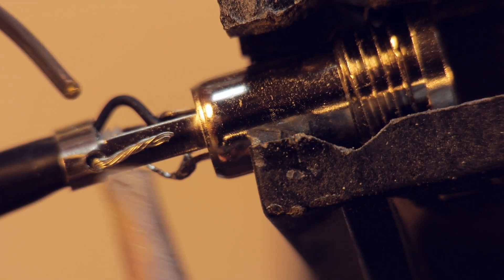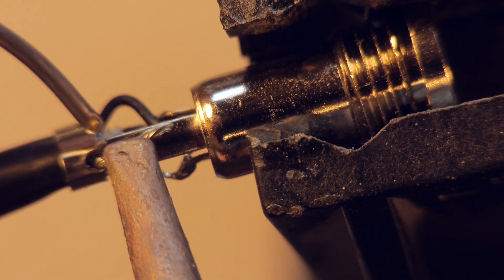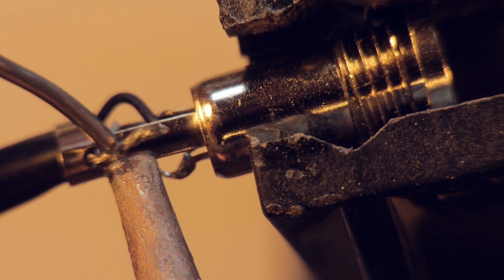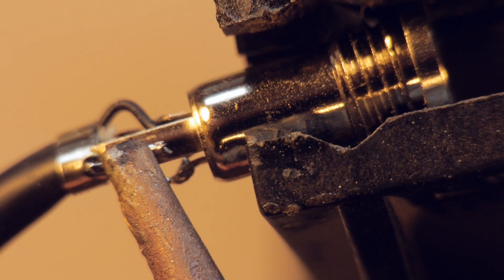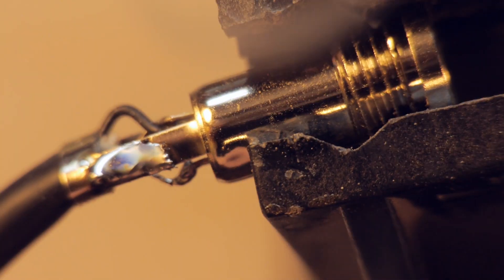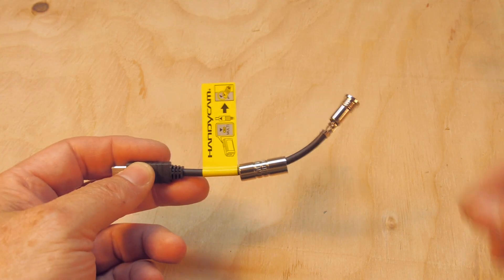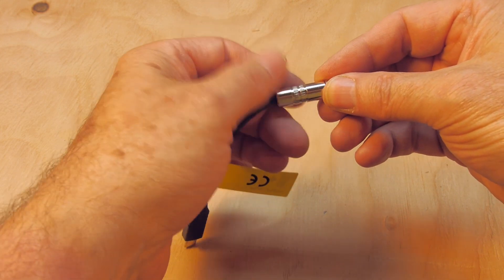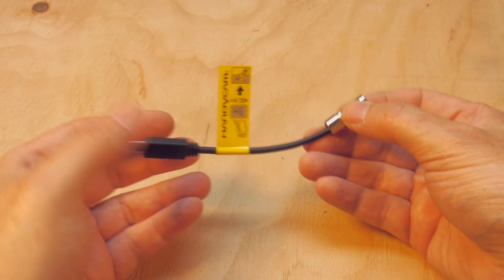And finally, we clamp the jack's clamp around the wire to hold it tightly and solder the braid onto the jack's ground terminal. Once we do that, our electrical connections are complete. And after everything's cooled down, we can screw the jack's cover and we have a completed adapter cable.